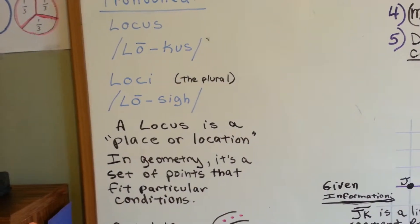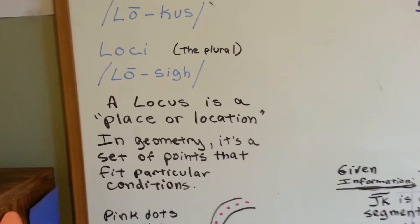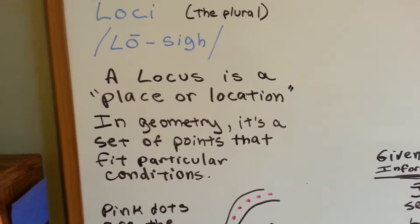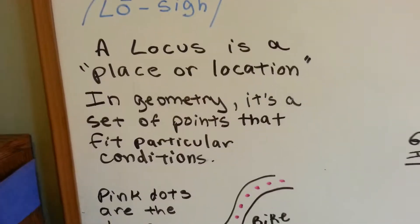So, a locus is a place or location. In geometry, it's a set of points that fit particular conditions.